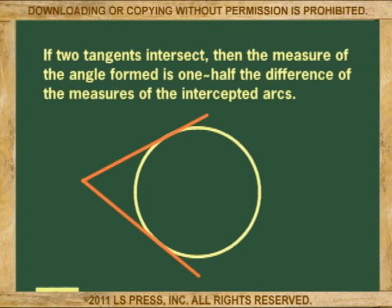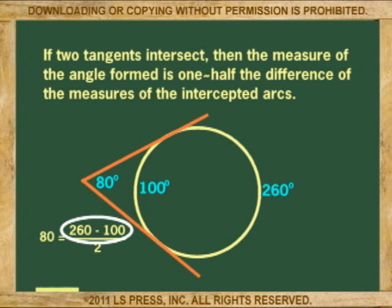If two tangents intersect, then the measure of the angle formed is one-half the difference of the measures of the intercepted arcs.